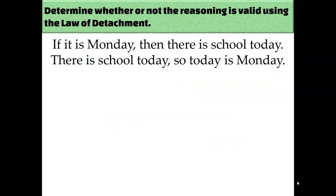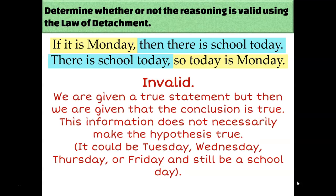Let's try another one. If it is Monday, then there is school today. Monday is the hypothesis, P, and 'school today' is the conclusion, Q. The next statement says: there is school today, so it's Monday. Those two statements are in the wrong order — I was given that the conclusion was true, which doesn't necessarily mean the hypothesis was true. This is invalid reasoning. Just because there's school today doesn't mean it's Monday; it could be Tuesday, Wednesday, Thursday, or Friday.